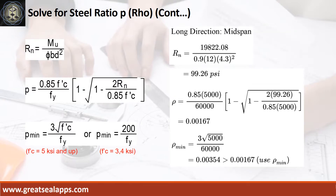Given long direction, mid-span moment equals 19,822.08 inch-pounds. Resistance factor equals 0.9, b equals 12 inches, and d equals 4.3 inches. The beam design ratio RN equals 99.26 PSI, and reinforcement ratio rho equals 0.00167. Use rho minimum of 0.00354.